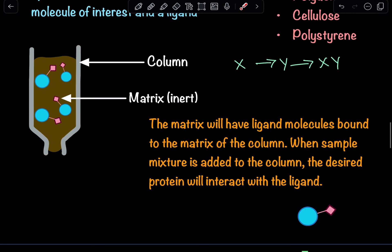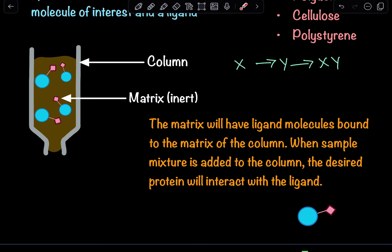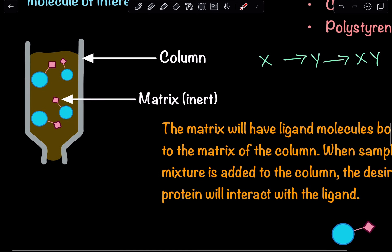The matrix will have that ligand bound to the support bead. When the mixture of different molecules is added to the top of the column, the desired protein or molecule that we are trying to isolate is going to interact with the ligand, whereas everything else is going to flow through the column.